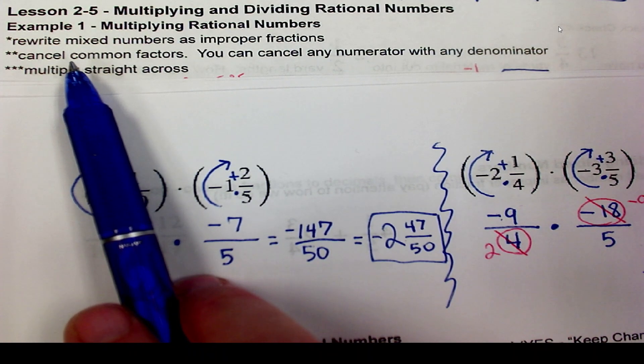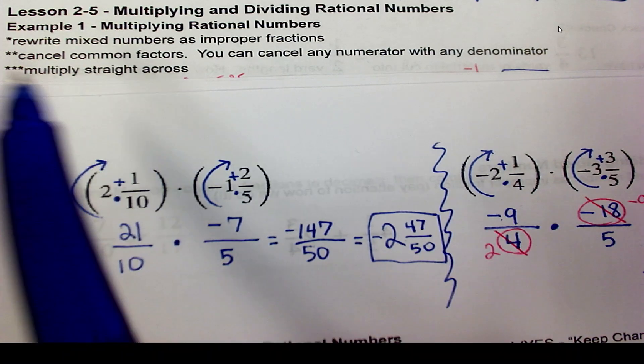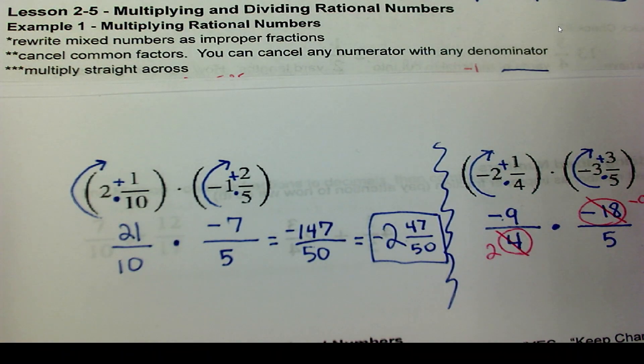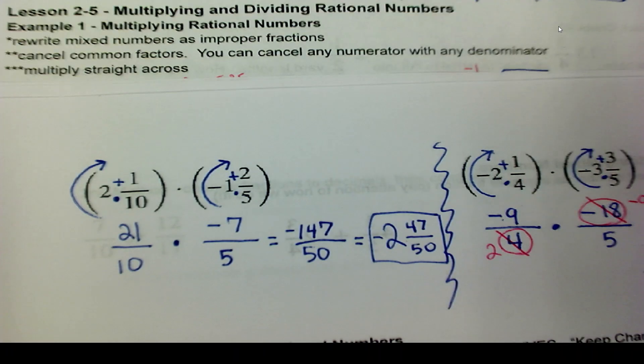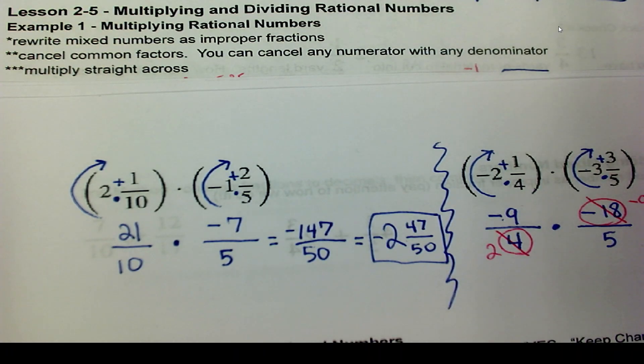Cancel the common factors is highly, highly recommended. If not, you can jump straight in and multiply straight across. But if you don't turn them into an improper fraction, you will get the wrong answer.